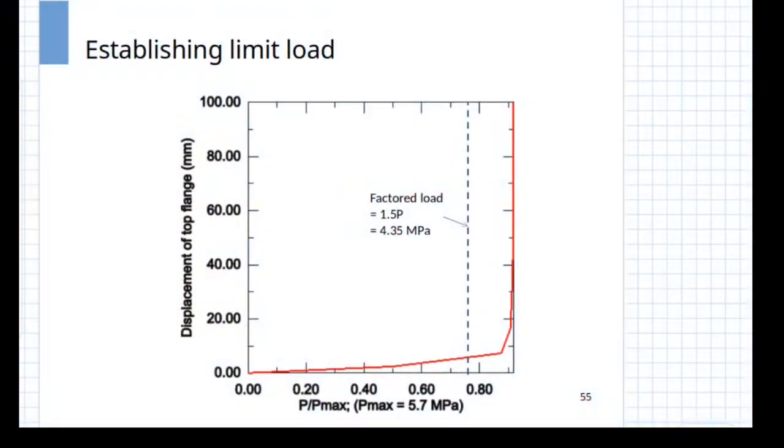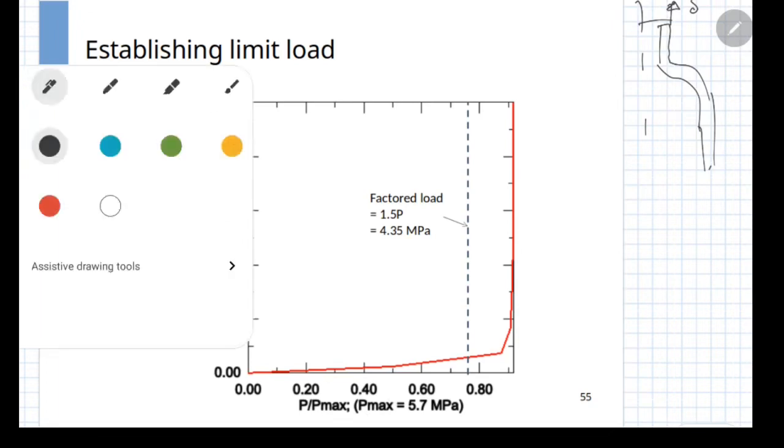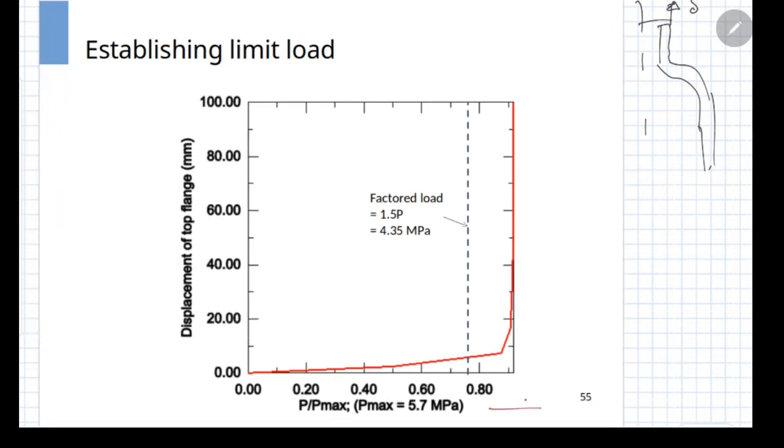In order to observe the limit load analysis, one typically observes displacement at a particular point in a body. In this case we are having the nozzle to the distant junction, so we are observing the displacement of the top point as the observation against the load. In this particular figure, the horizontal axis belongs to the load and the vertical axis belongs to the displacement at the top point of the model.